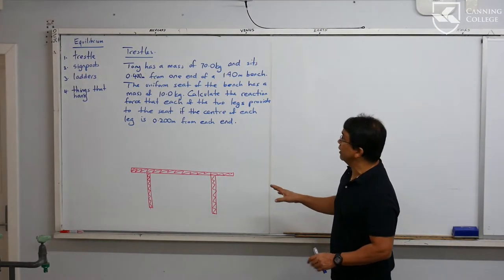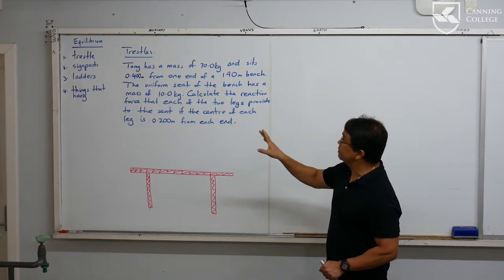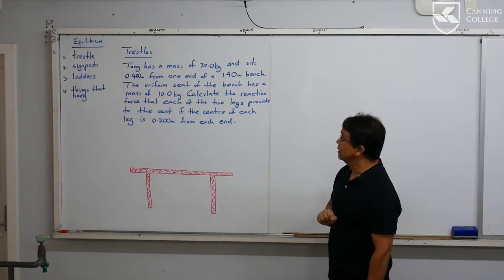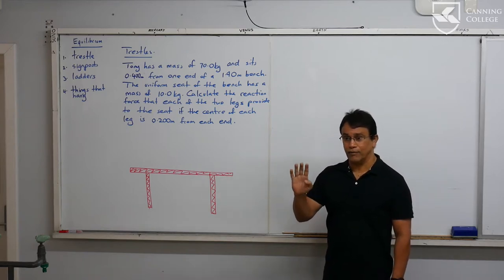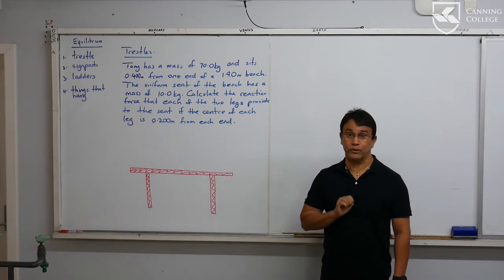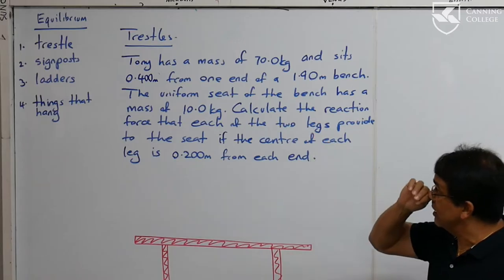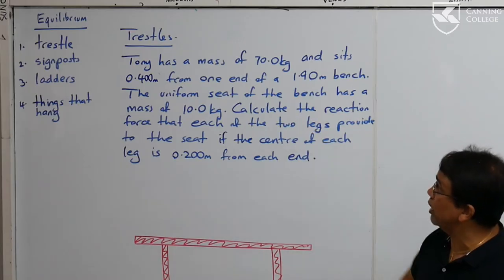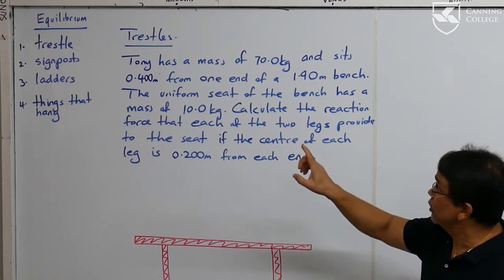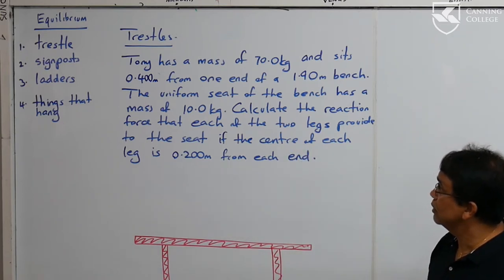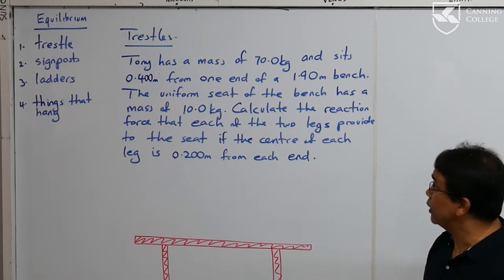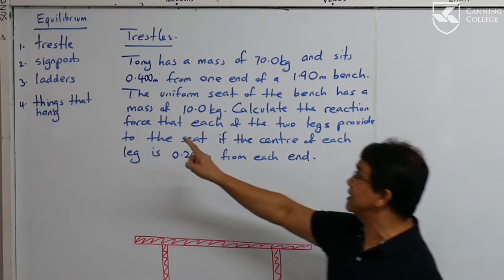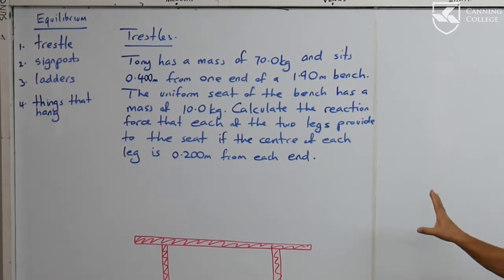In this particular part of the course, the questions you'll encounter fall into generally four categories. On the left-hand side of the board: trestle-type questions, which we're going to look at today; signpost-type questions, which also cover cranes and drawbridges; the ladder question; and then things that hang. Let's look at the question I've framed up on the board.